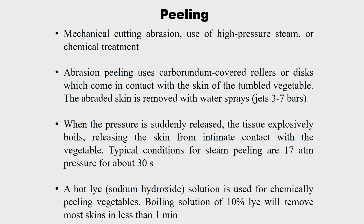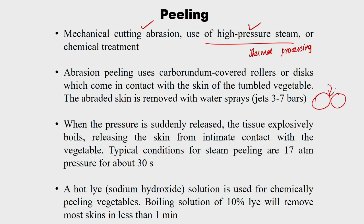The second operation is peeling, done in three ways: by cutting, abrasion, or use of high-pressure steam. Abrasion peeling uses silicon carbide-covered rollers; the vegetable is put between the rollers which contact the skin and remove it by abrasion, followed by water sprays at 3 to 7 bar pressure to remove the skin properly. However, in abrasion, some flesh material is also removed along with the skin, making it less efficient compared to high-pressure steam peeling.